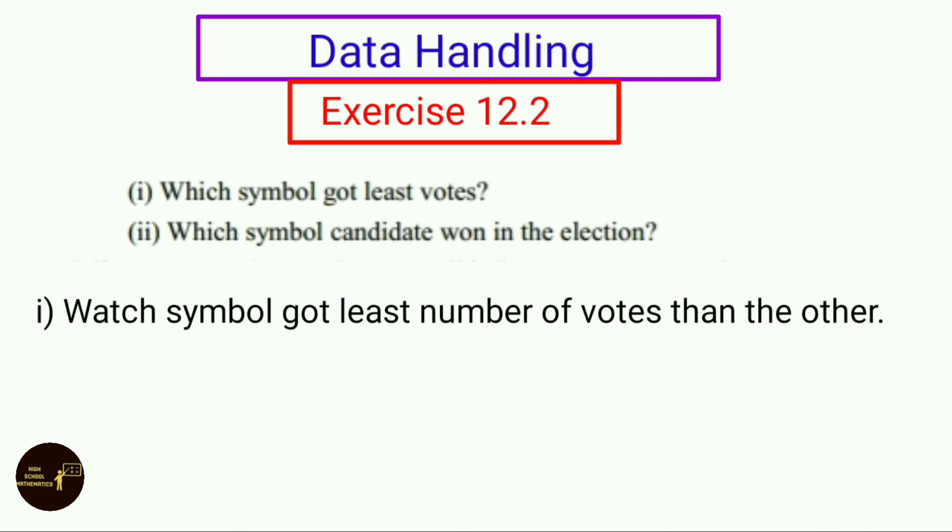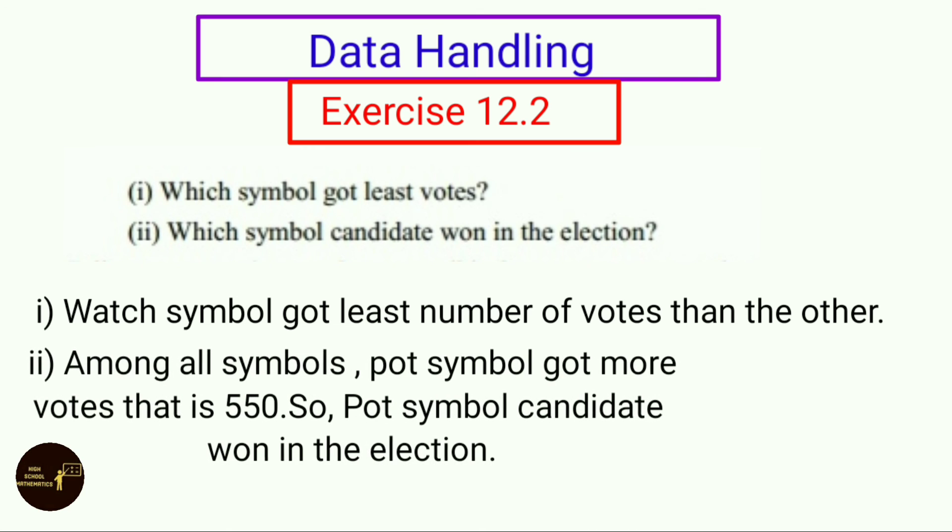Which symbol got least votes? Watch symbol got least number of votes. Which symbol candidate won in the election? Among all symbols, pot symbol got more votes, that is 550. So pot symbol candidate won in the election.